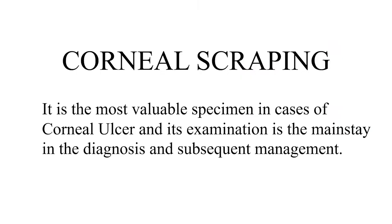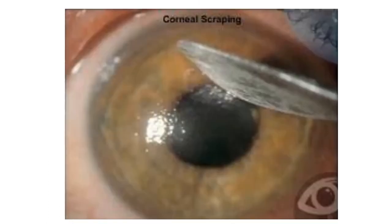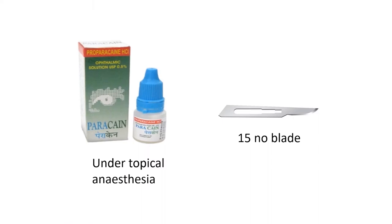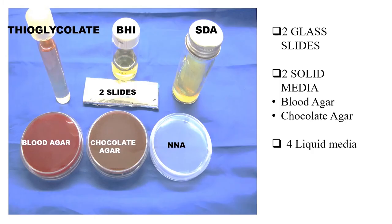Corneal scraping is a very valuable specimen in cases of corneal ulcers. Its examination is the mainstay in the diagnosis and subsequent treatment. It is done under topical anesthesia using a number 15 blade. Scraping is done from the base and the edge of the ulcer using the sharp end of the blade to obtain the maximum yield of organisms. The specimen is inoculated on two slides, one for gram stain and the other for the KOH mount.